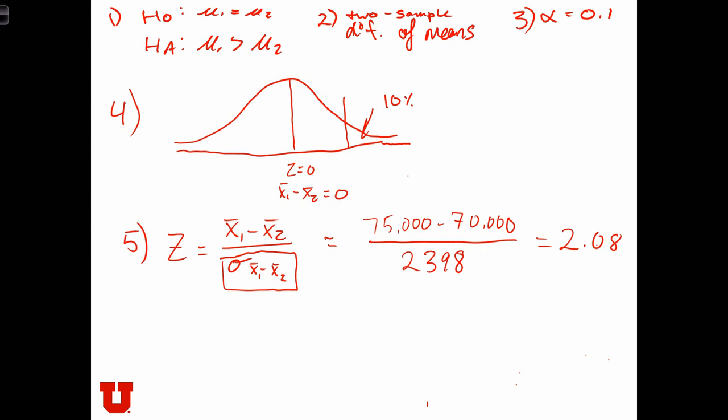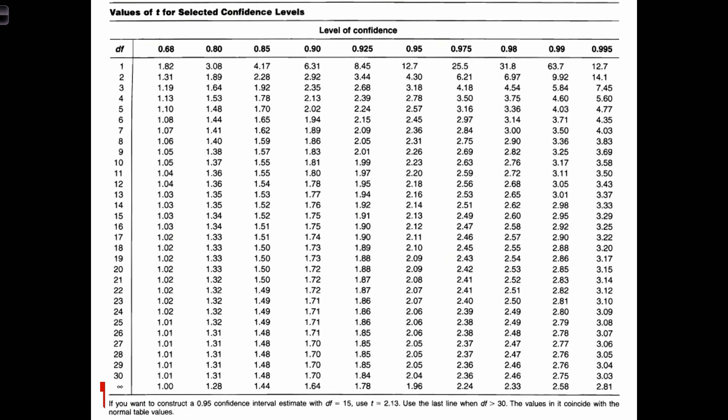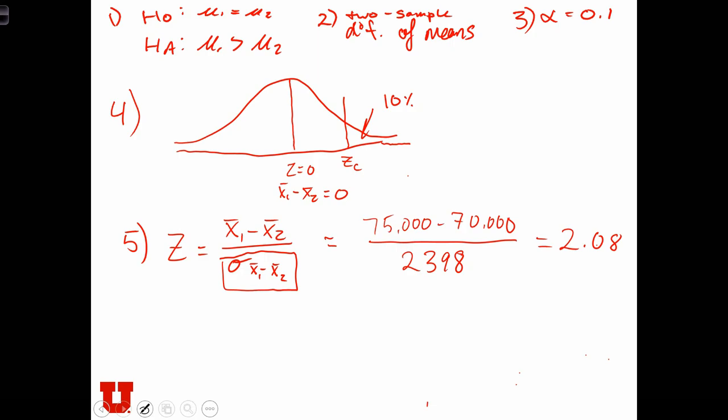So our z-score is 2.08. We never actually calculated yet what our z-critical value has to be with 10% in the tail. So to do that, we're going to use the 80% confidence interval. And this is a z-score because the σs were known. Therefore, we've got a critical value of 1.28. Critical value is 1.28, and our test statistic is zt equals 2.08.